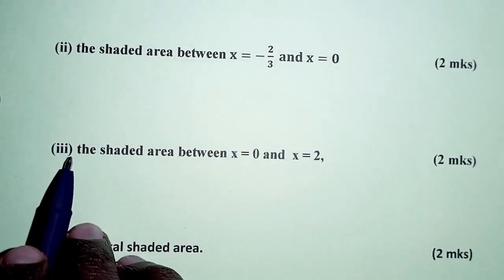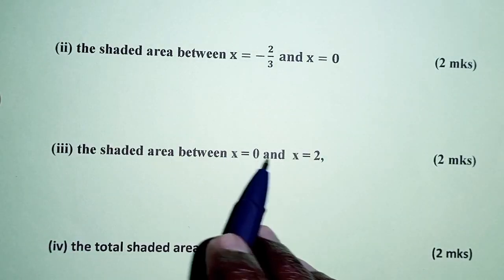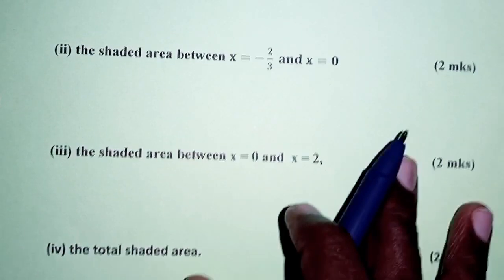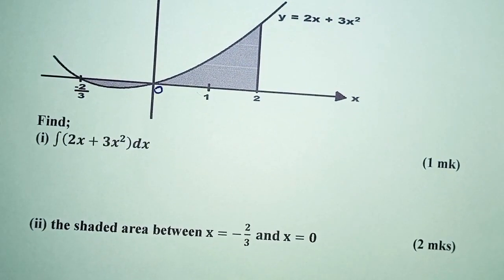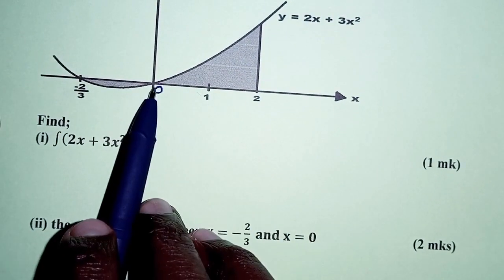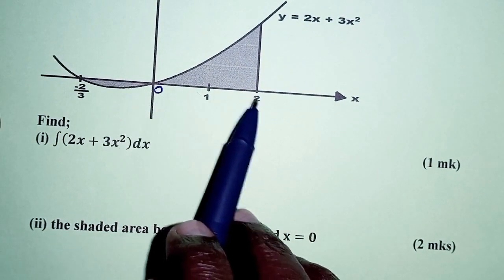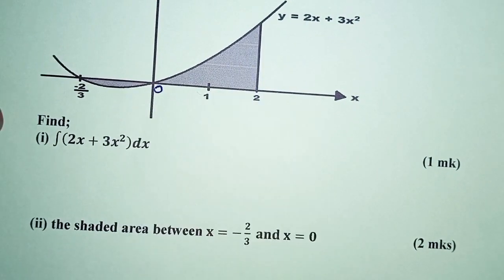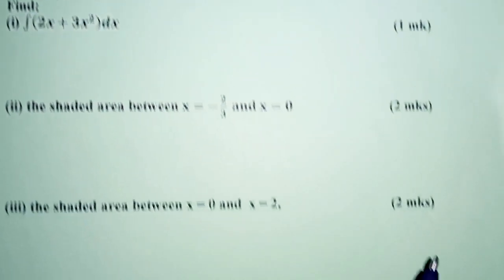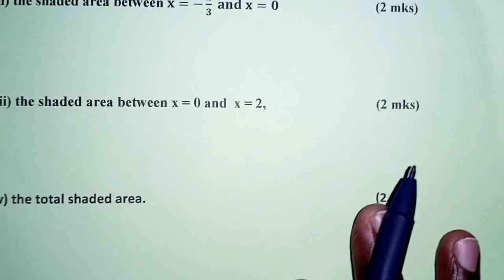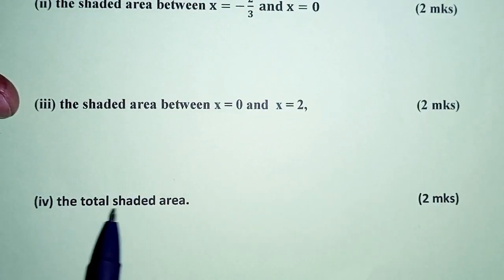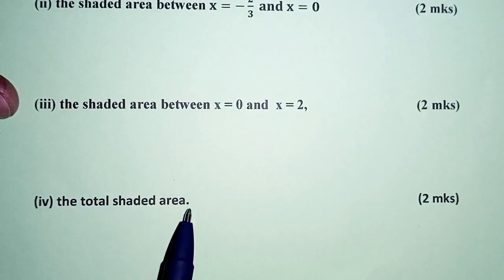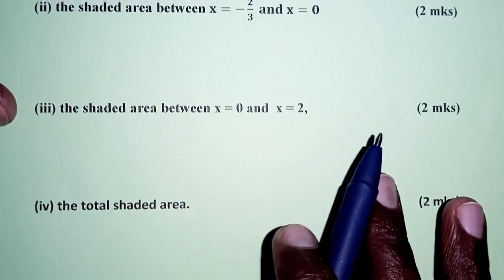Roman 3: find the shaded area between x equals 0 and x equals 2 — again the shaded region from 0 up to 2. And lastly, find the total shaded area.